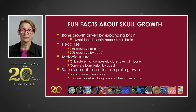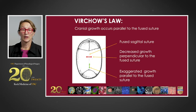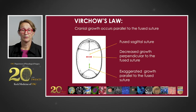Sutures do not fuse after complete growth of the head; there's always fibrous tissue intervening. In craniosynostosis, bony fusion of the suture occurs. Virchow's law tells us that cranial growth occurs parallel to the fused suture. This is a picture of a child with a fused sagittal suture. You can see that the head is long and narrow — there is decreased growth perpendicular to the fused suture and exaggerated growth parallel to the fused suture.